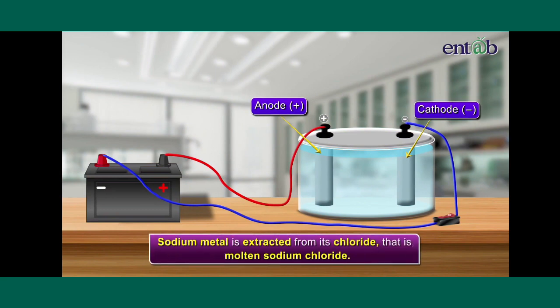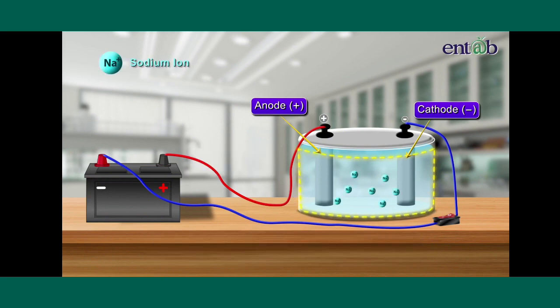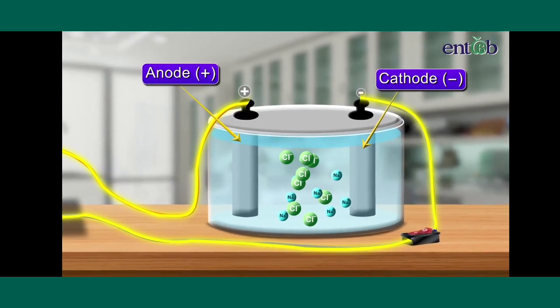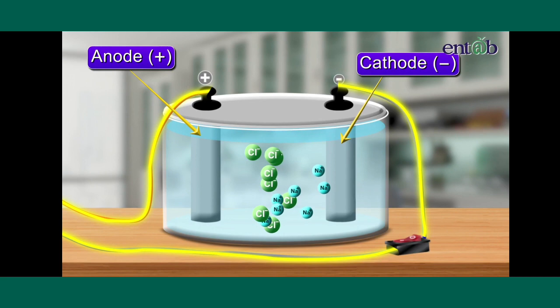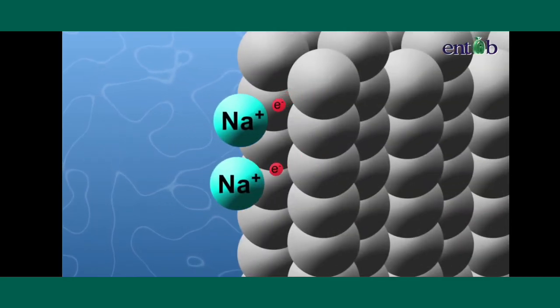Sodium metal is extracted from its chloride, that is molten sodium chloride. Sodium chloride contains sodium ions and chloride ions in its molten state. When an electric current is passed through the molten sodium chloride, it decomposes to form sodium metal and chlorine gas. During the electrolysis, the positive sodium ions are attracted to the cathode, which is the negative electrode. The sodium ions take an electron from the cathode and reduce to form neutral sodium atoms.